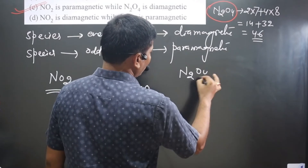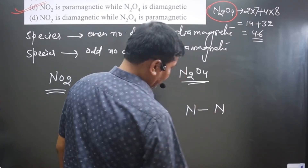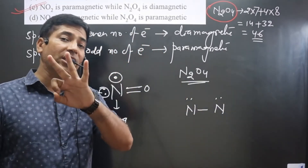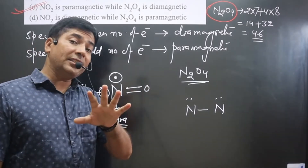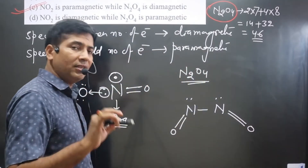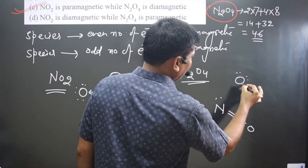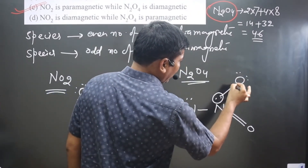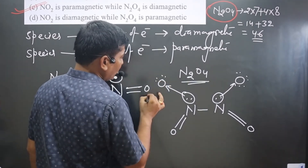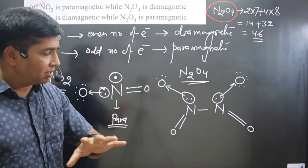Now let's draw the structure of N₂O₄. There are 2 nitrogen atoms linked together. Each nitrogen has 1 lone pair because out of 5 valence electrons, nitrogen can form only 3 bonds. We distribute the 4 oxygens: 1 oxygen attached here via double bond and 1 oxygen here via double bond. The remaining 2 oxygens donate electron density forming coordinate bonds. This is the structure of N₂O₄.